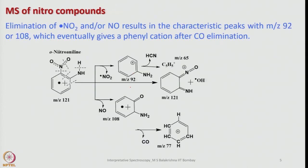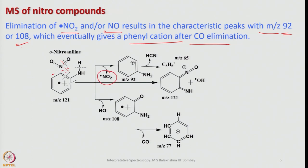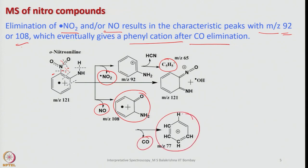Now let us look into mass spectra of nitro compounds. In nitro compounds, elimination of NO₂ or NO is initially possible. In those cases we get characteristic peaks at m/z = 92 or 108: if NO₂ is lost we get 92, and if NO is lost we get 108, which eventually gives a phenyl cation similar to what we saw in amides. The bond can break to give NO or NO₂, yielding an anilinium cation, from which HCN comes out giving C₅H₅, and eventually CO is eliminated to form the phenyl cation. This is very similar to the fragmentation of aromatic amides.